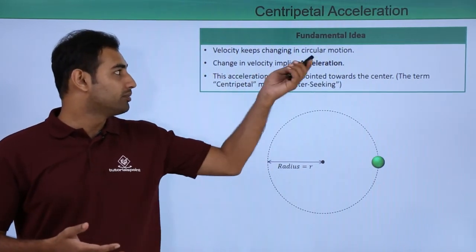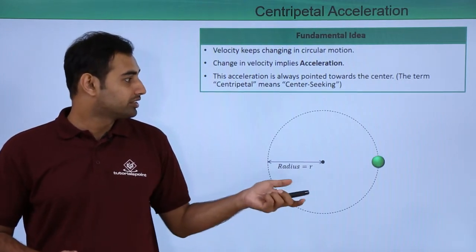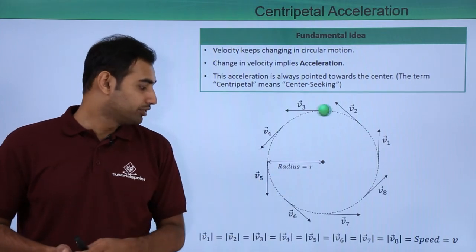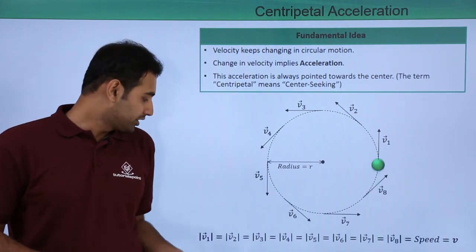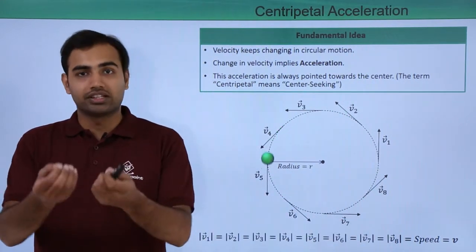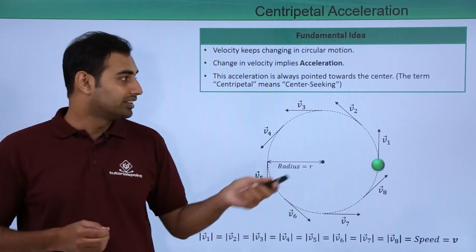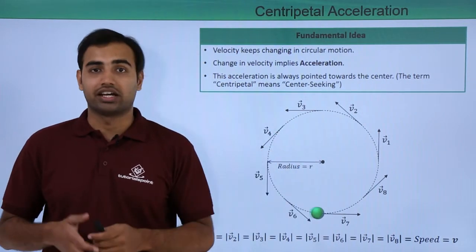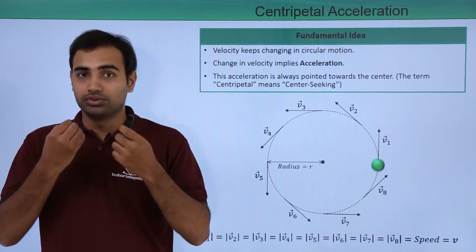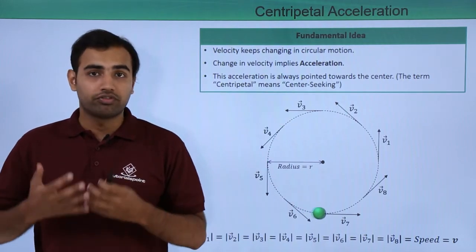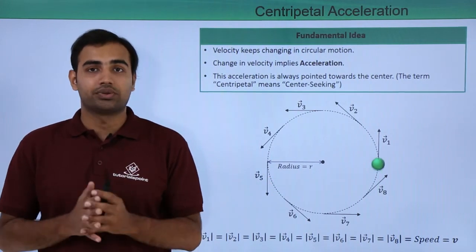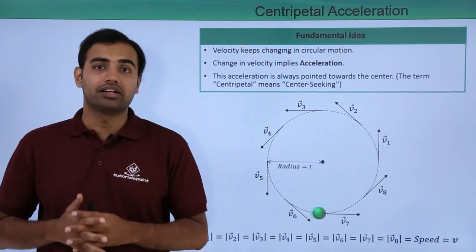We said that velocity keeps changing in circular motion. We saw that with a demonstration that when the object goes around in the circle, the velocity is always tangential to the motion of the object. In that situation, the magnitudes of all the velocities are equal to each other, which is equal to the value of speed, which we can say small v. The direction of the velocities are constantly changing. Now this change in velocity gives rise to an acceleration, and what we find out is that this acceleration is always directed towards the center.